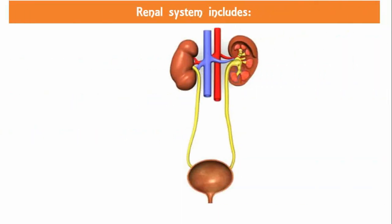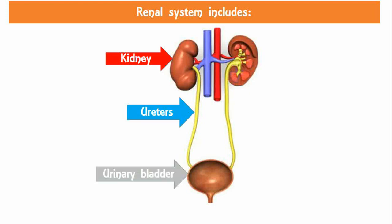The renal system includes a pair of kidneys, ureters, urinary bladder, and urethra. A pair of kidneys are located high in the abdominal cavity, one on each side of the spine, lying at a slightly oblique angle. The asymmetry caused by the position of the liver typically results in the right kidney being slightly lower, smaller, and placed slightly more to the middle than the left kidney.